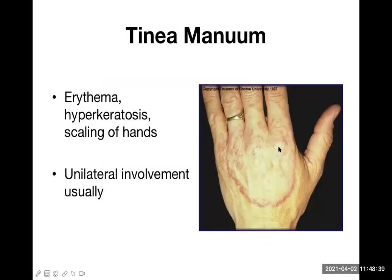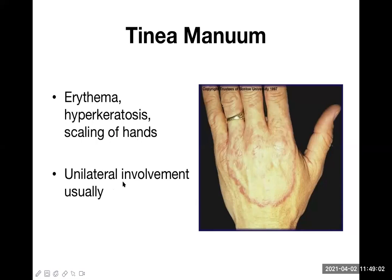Tinea manum involves the dorsal surface of the hand — a typical dermatophyte lesion. Features include erythema and hyperkeratosis, meaning excessive scaling or flaking. Usually only one side is involved — unilateral involvement.